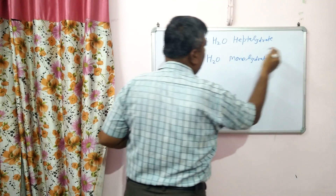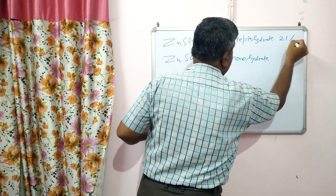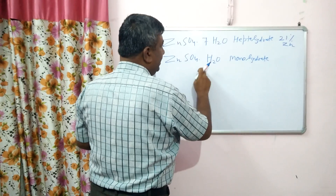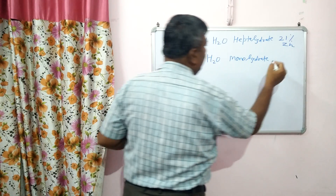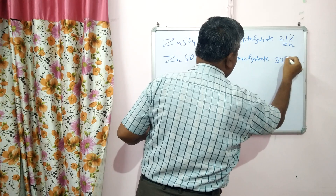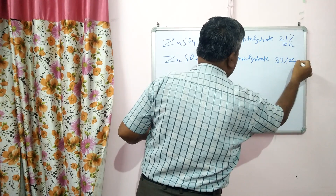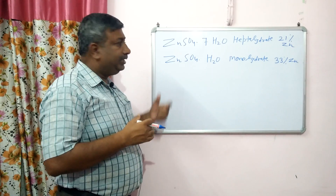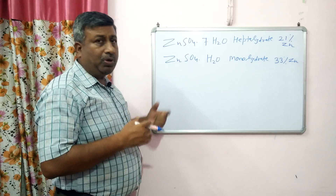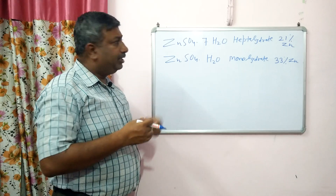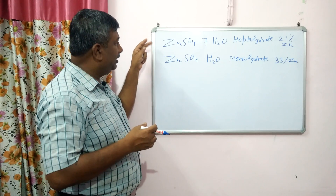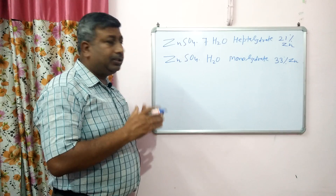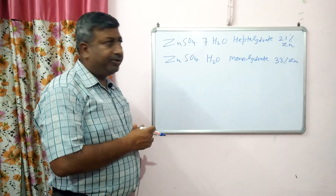In the case of heptahydrate, the zinc content is 21%, while in the case of monohydrate, it is 33% zinc content. Since the zinc content is different, the amount of application is also different. Both have different application rates.